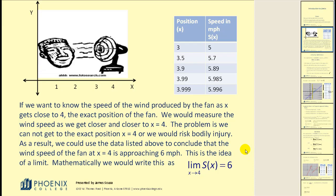Let's take a look at our table. If we start with an x value of three and approach positive four — you can see 3.5, 3.9, and so on — what we're concerned about is what's happening to the value of the function, or the y values. You can see from the table that it is approaching the value of six. This is the idea behind a limit. Mathematically, we would write this as: the limit of s of x as x approaches positive four is equal to six.